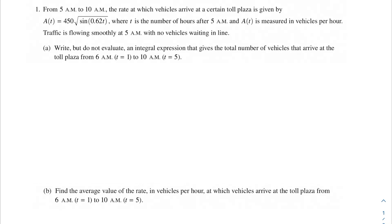In this video we're going to be going over this problem that has to do with the rate at which vehicles arrive at a certain toll plaza. From 5 a.m. to 10 a.m., the rate at which vehicles arrive at a certain toll plaza is given by this function, where t is the number of hours after 5 a.m., and A(t) is measured in vehicles per hour. Traffic is flowing smoothly at 5 a.m. with no vehicles waiting in line.